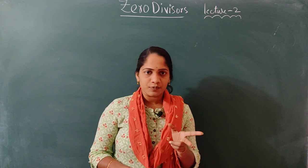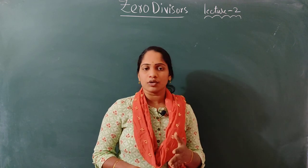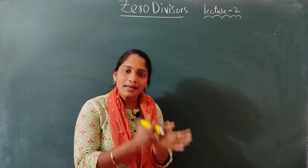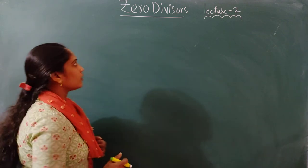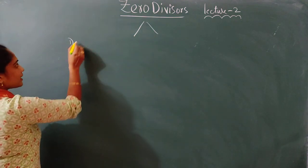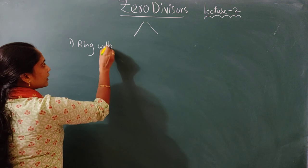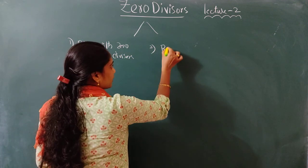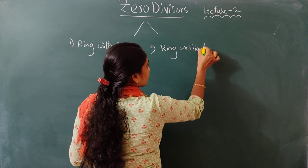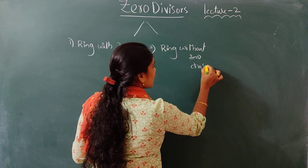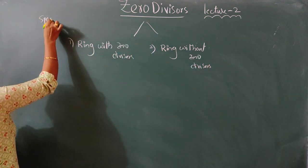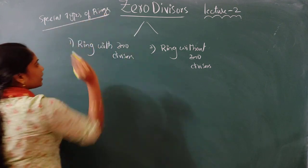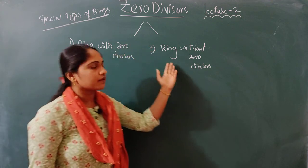How many types of rings are there? Two types of ring: commutative ring with unity and commutative ring. And here, another special type of ring — zero divisors. There are two types: ring with zero divisors and ring without zero divisors. These are special types of rings.